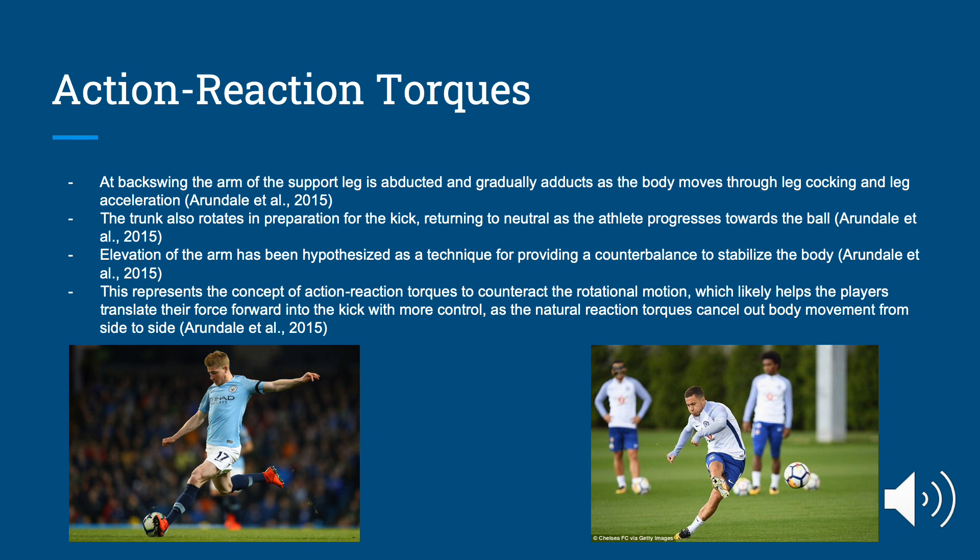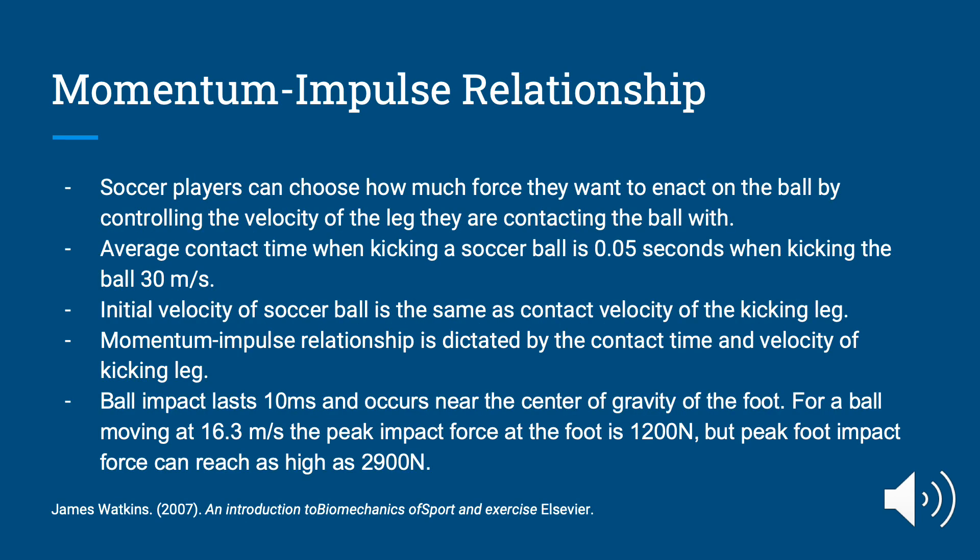Now we're going to talk about the momentum-impulse relationship. Soccer players can choose how much force they enact on the ball by controlling the velocity of the kicking leg. Average contact time when kicking a soccer ball is 0.05 seconds when kicking at 30 meters per second. The initial velocity of the ball is the same as the contact velocity of the kicking leg, and the momentum-impulse relationship is dictated by contact time and kicking leg velocity. A study shows that ball impact lasts 10 milliseconds and occurs near the center of gravity of the foot. For a ball moving at 16.3 meters per second, the impact force is 1,200 newtons, but peak foot impact force can reach as high as 2,900 newtons.